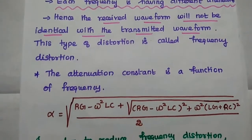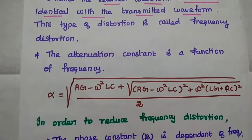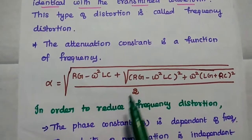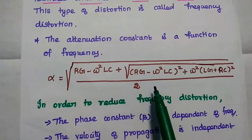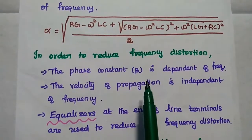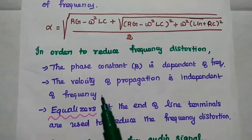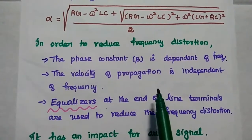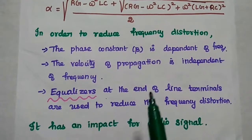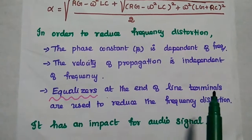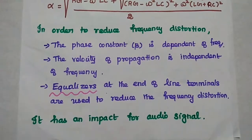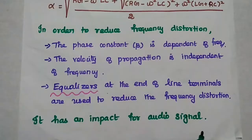Frequency distortion depends on the attenuation constant value because the attenuation constant alpha is a function of frequency. Here, alpha in terms of frequency is given by this formula — this is the attenuation constant for a transmission line. In order to reduce frequency distortion, the phase constant value should be independent of frequency, and the velocity of propagation should also be independent of frequency. Equalizers at the line terminals are used to reduce frequency distortion. Frequency distortion has a serious impact on audio signal transmission.